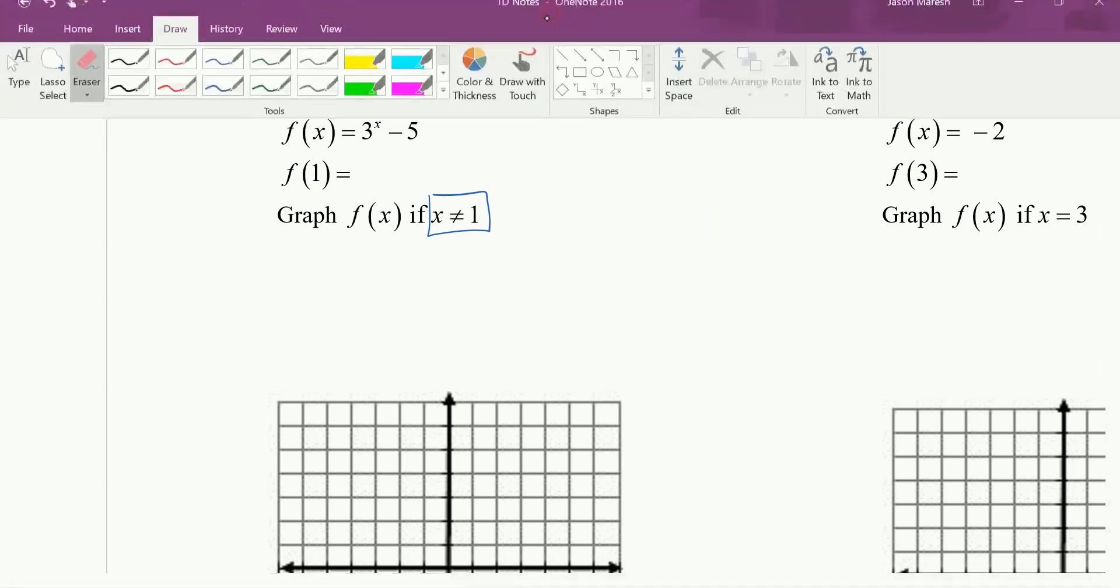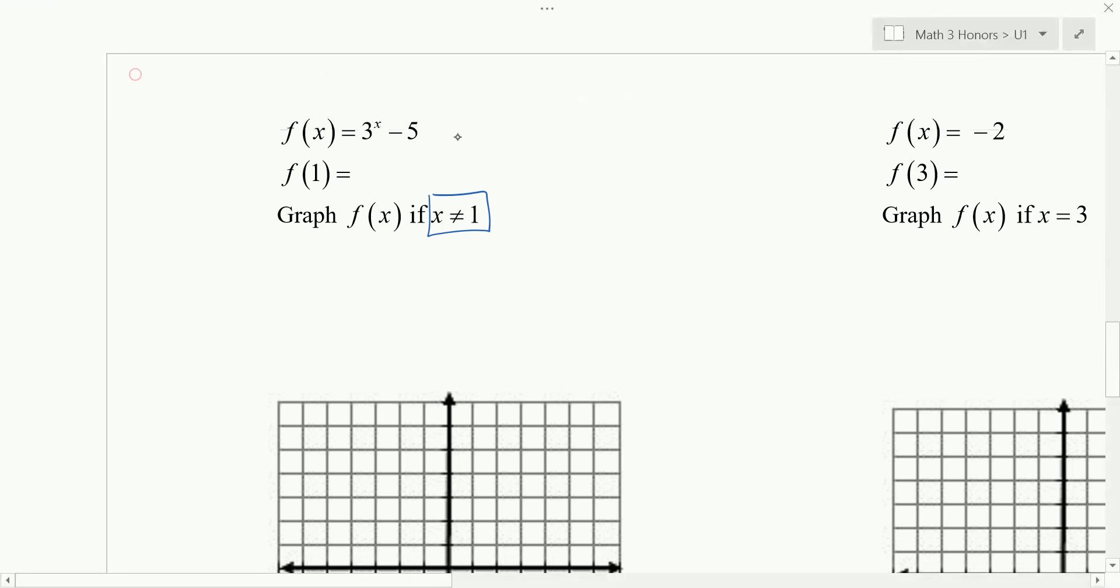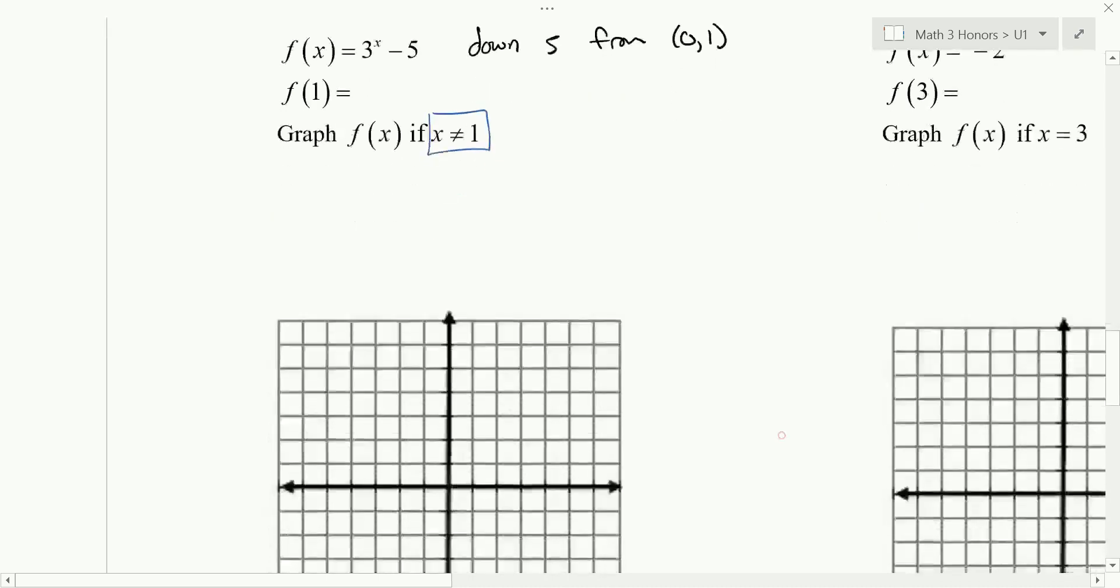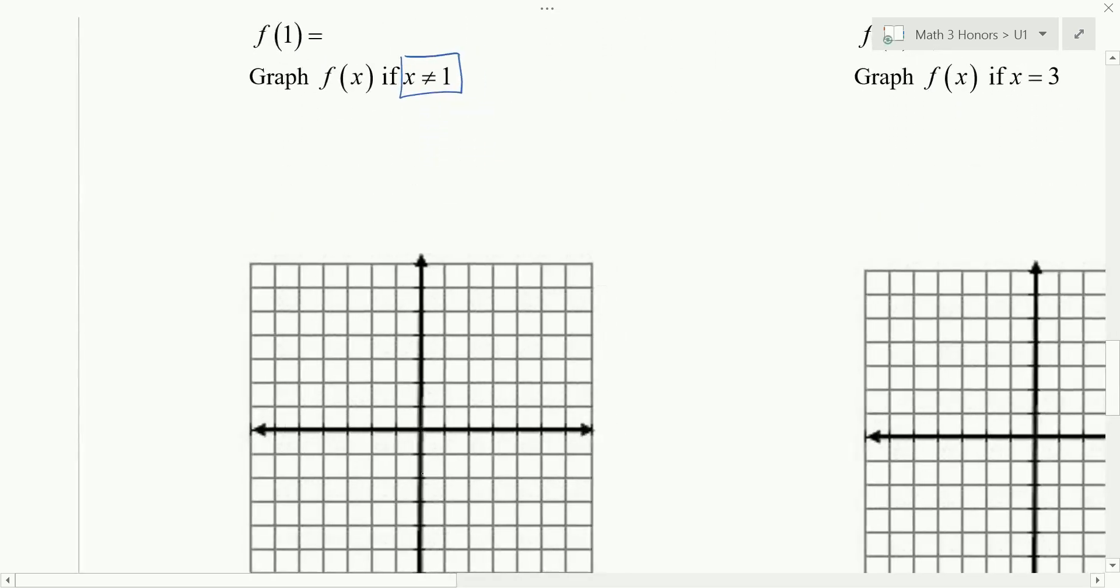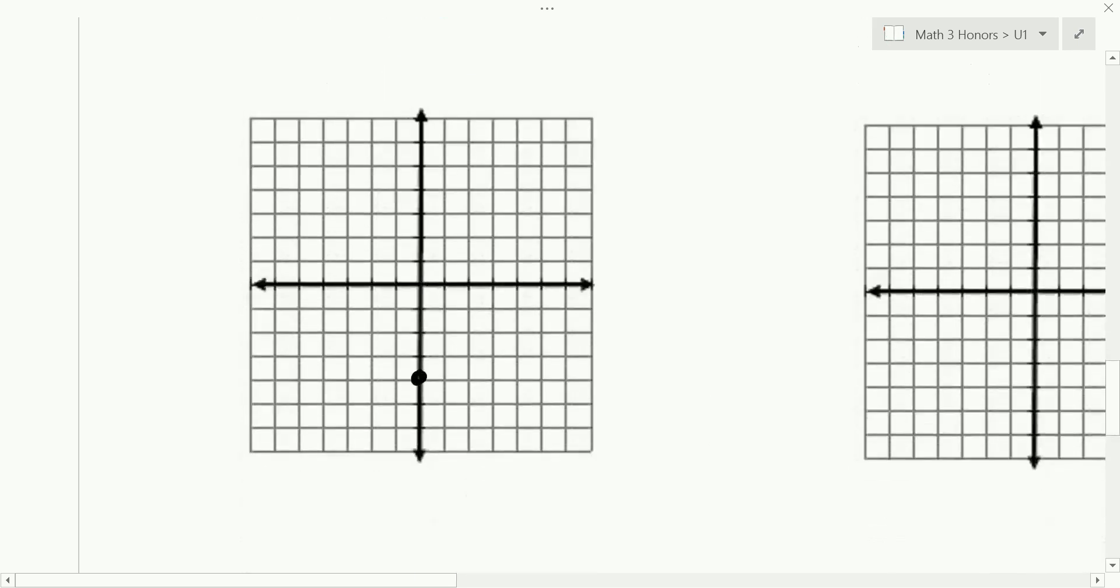So for this graph, we're going to go down five. From which point? Zero, one, because the parent graph of the exponential goes through zero, one. And so down five from zero, one. And when that moves down, what else moves down? That horizontal asymptote. Okay, so that horizontal asymptote now is at y equals negative five.